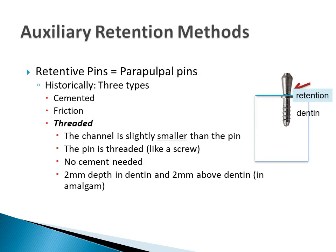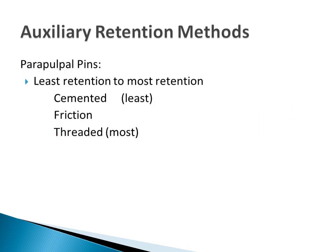In the threaded pin, the channel is slightly smaller than the pin. The pin is threaded and no cement is needed. These are also about 4 mm in length — 2 mm of the pin is in dentin, and 2 mm is in the amalgam. The least retentive pin type is the cemented pin. The most retentive pin is the threaded pin.